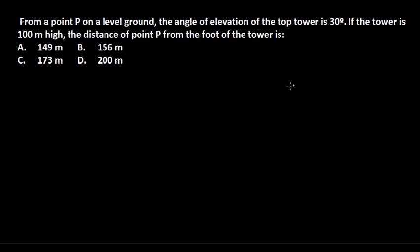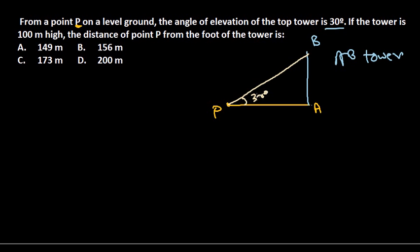So let's construct it. From a point P on a level ground, let us form a ground first. This is the level ground here. Let's make it A. From the point P, the angle of elevation of the tower is 30 degrees. So let's draw a tower standing here. Let's say it is B. This is the tower AB, and the angle of elevation is 30 degrees, so obviously this angle is 30 degrees.